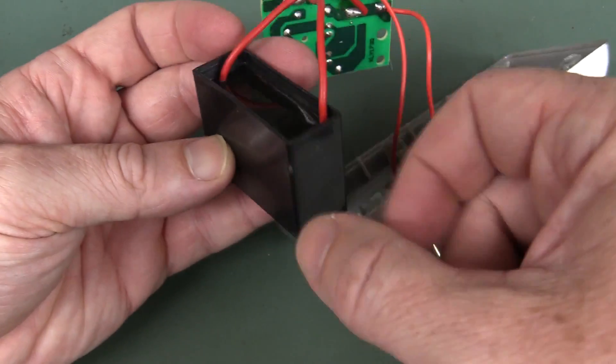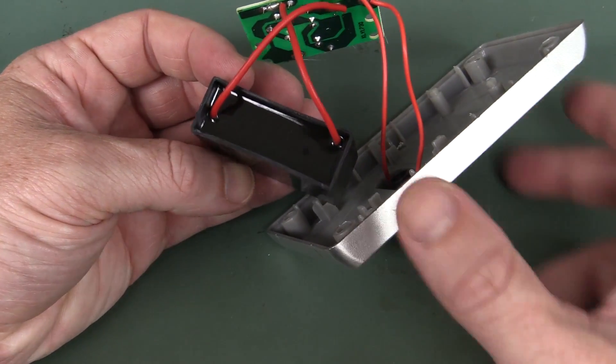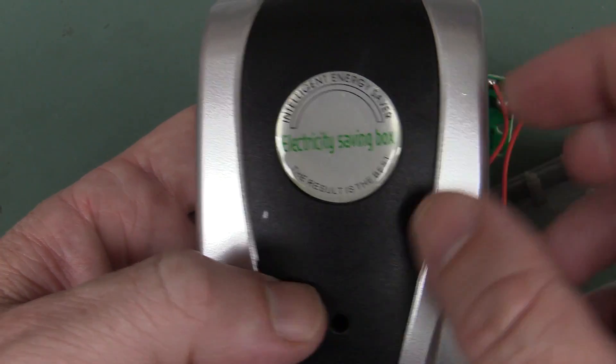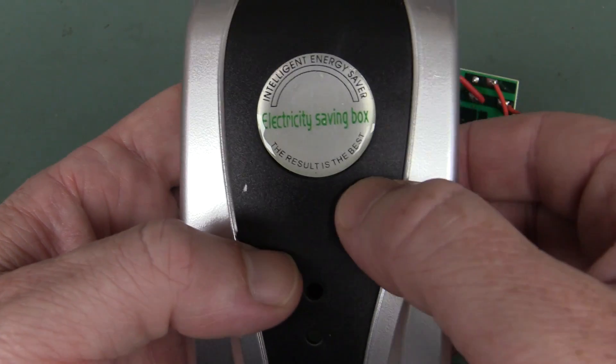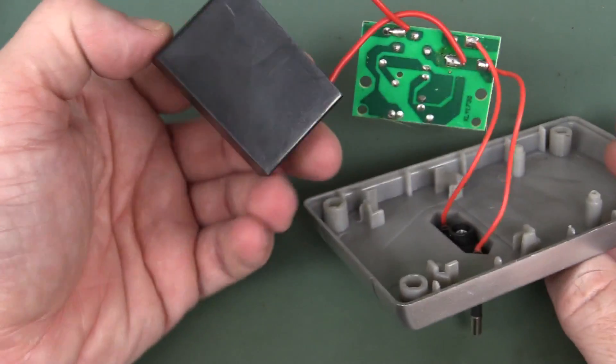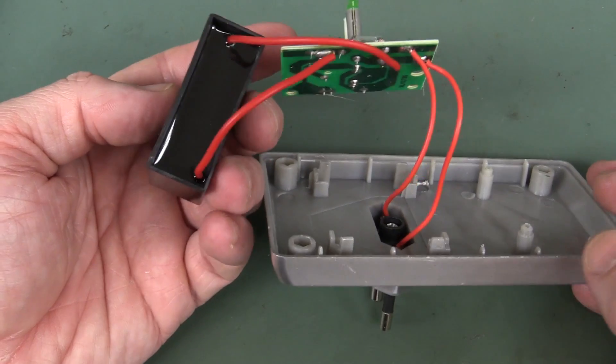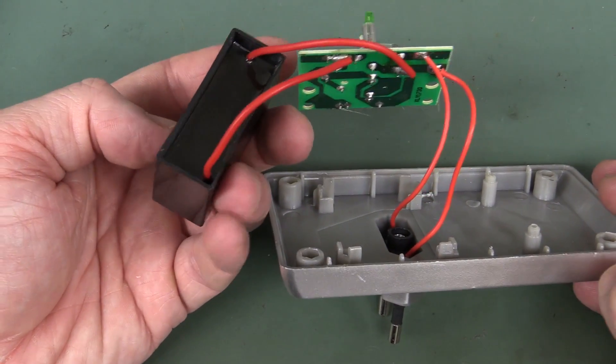But that's actually a potting box, and they've put something in there because this is supposed to be an intelligent energy saver. Intelligent, the result is the best. So, have they put just like a board in there or is it just like two just dangling loose wires in a potted box?